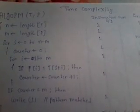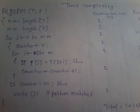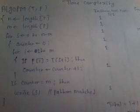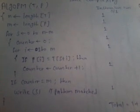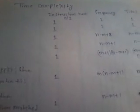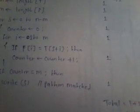Now we compute the time complexity of this algorithm. Time complexity is the number of instructions in a program which are executed with their frequencies. For the first instruction computing N, the length of T, its frequency is 1, so the total is 1. Similarly, for computing length M, the total is also 1. For the loop S equal to 0 to N minus M, the frequency is N minus M plus 2, so the total is N minus M plus 2.